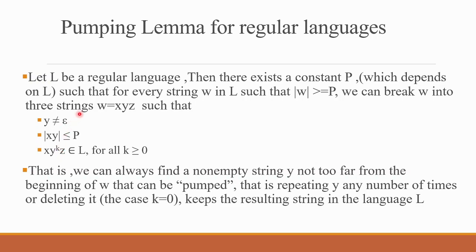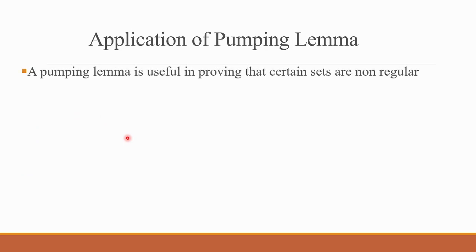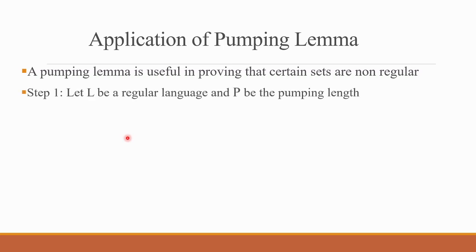This is the Pumping Lemma definition and its application. The Pumping Lemma is useful in proving that certain languages are non-regular. We use it in a proof by contradiction method. We start by assuming a particular language is regular. If it is regular, then it must hold all the conditions of the Pumping Lemma. If the conditions fail, then our assumption was wrong, and the language is not regular.